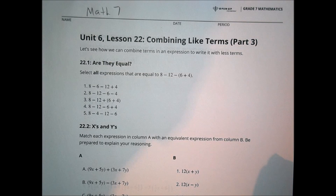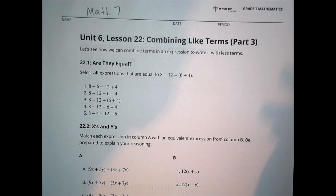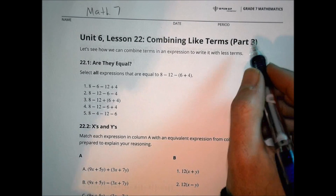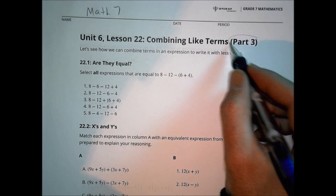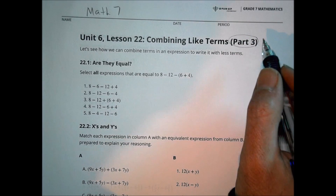Okay, so it's Math 7, Unit 6, Lesson 22. It's our last lesson in this unit — combining like terms — and we're on Part 3.